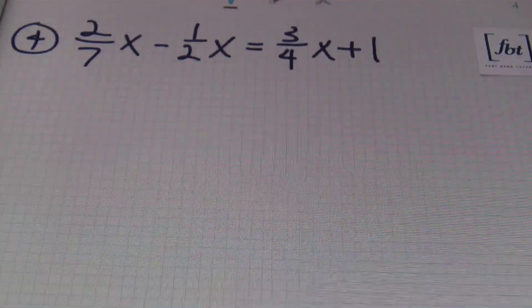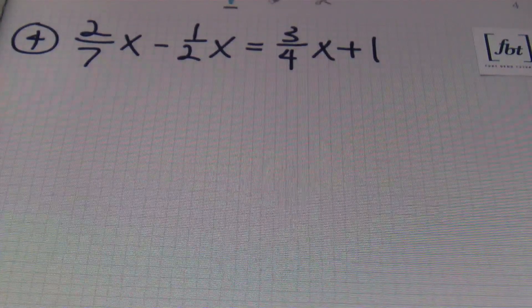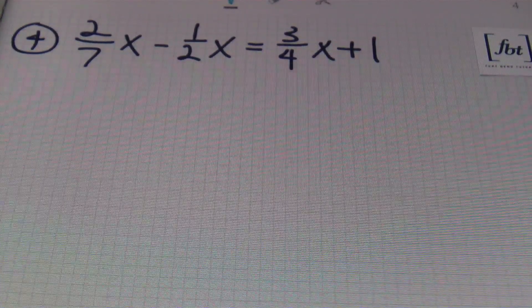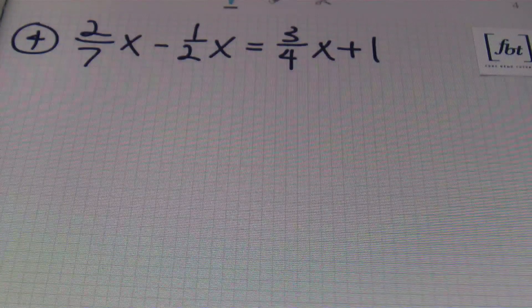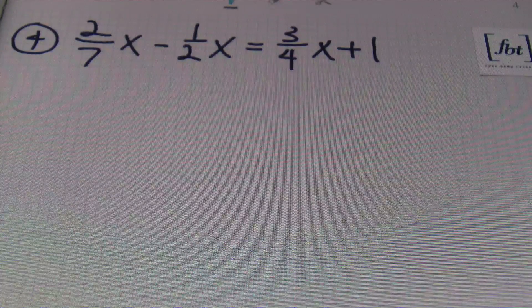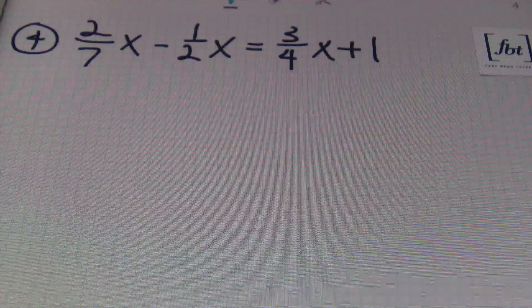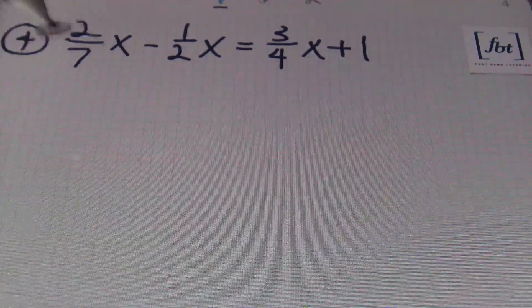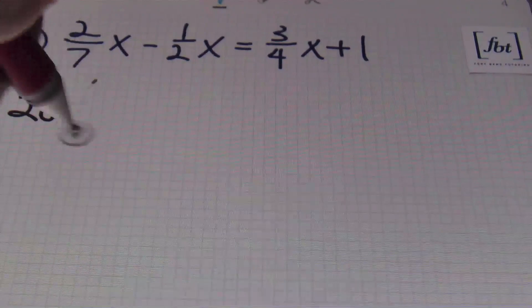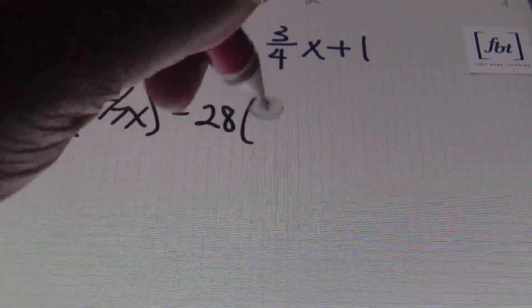I've got quite a few examples to show you today. Problem four: we have two-sevenths x minus one-half x equals three-fourths x plus one. We have a lot of fractions here. Looking at denominators seven, two, and four, the first number that all three of these denominators go into evenly is going to be 28. So I'm going to multiply each and every term by 28.